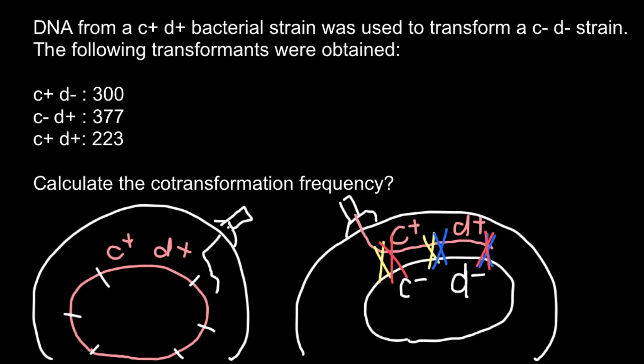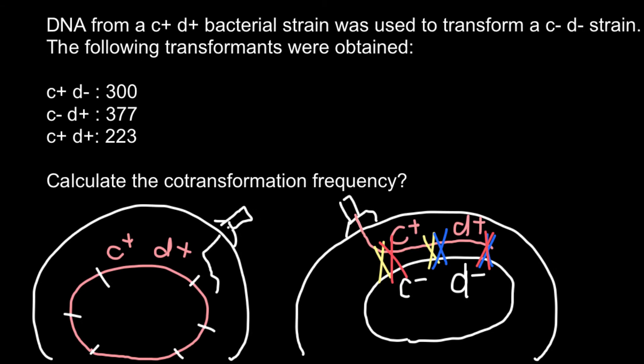Now, let's analyze our problem and take a look at what we see in the first case. Crossing over happened here and here. And C-positive was incorporated as this gene took the place of the C-negative allele in the host genome.